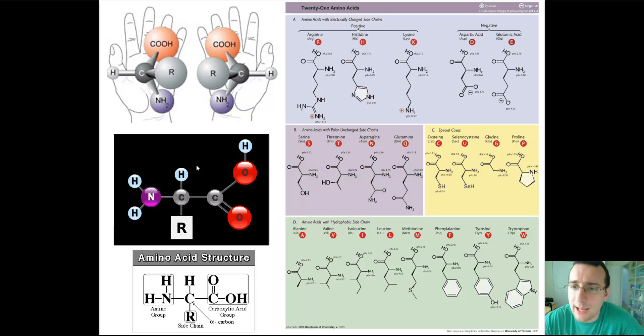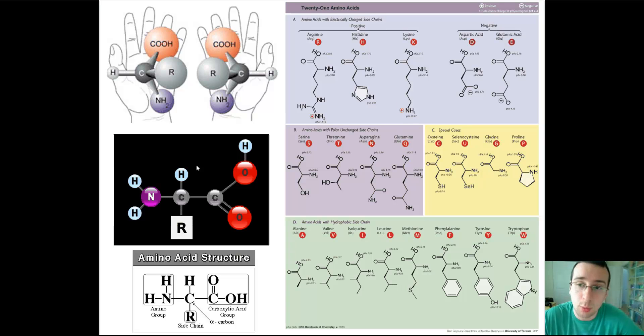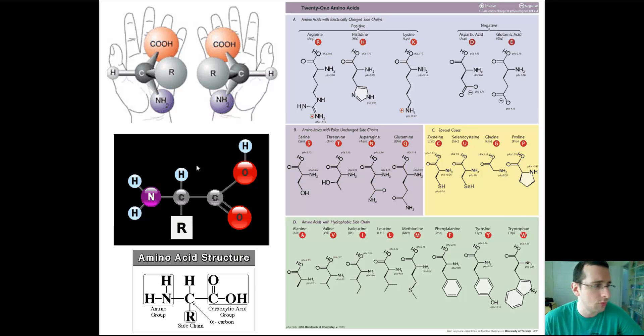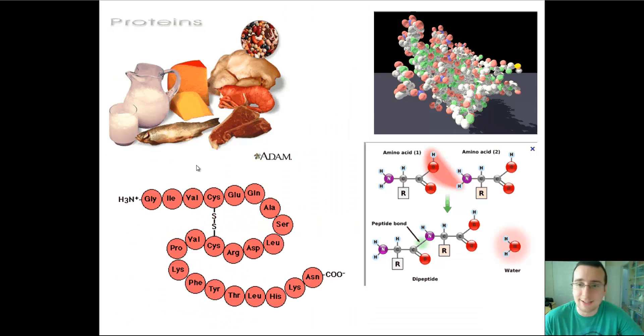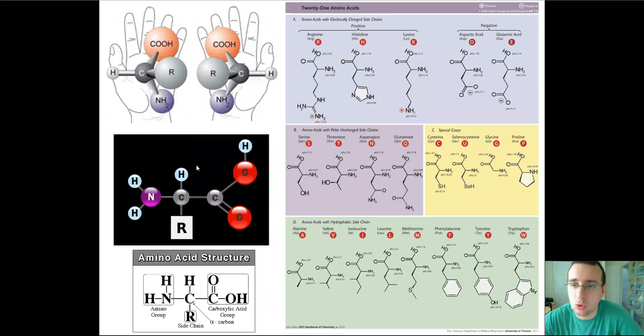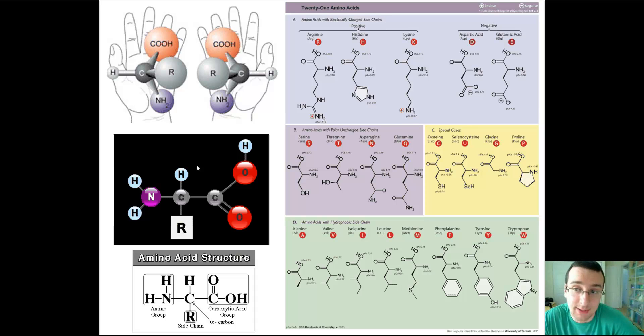The amino group will give alkaline properties to the molecule, and the carboxyl group will give acidic properties, making it overall neutral. Notice that every protein starts with an amino group, which is called the N-terminus, and ends with the carboxyl group, which is called the C-terminus. The difference is that side chain, or the R-chain.